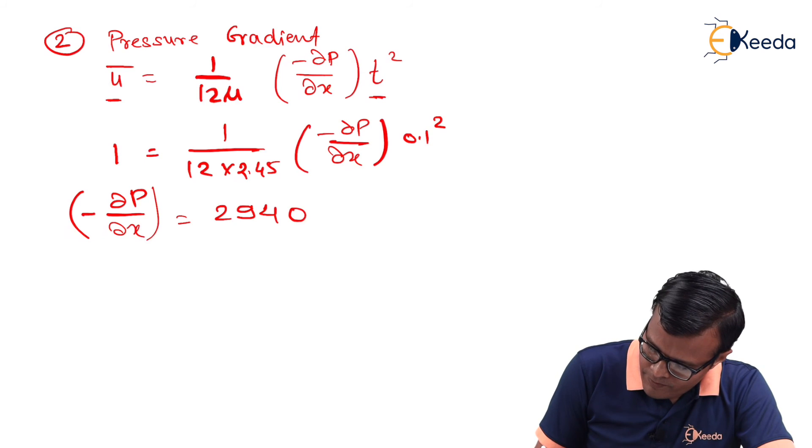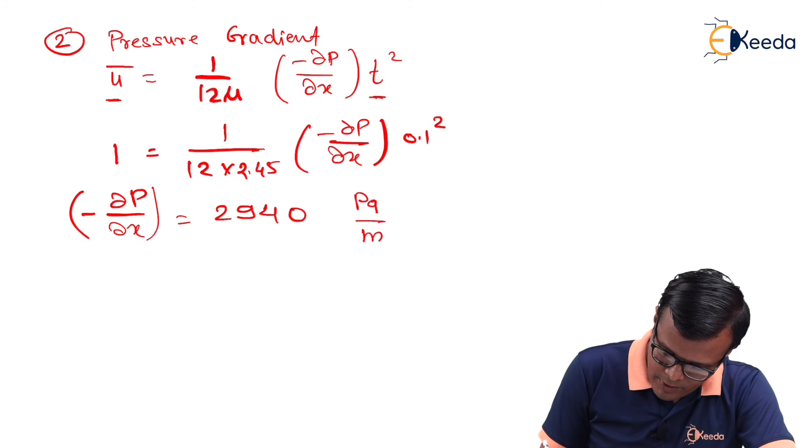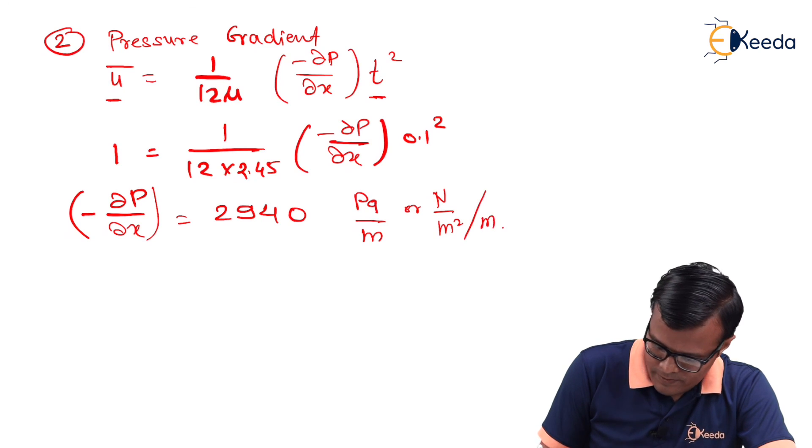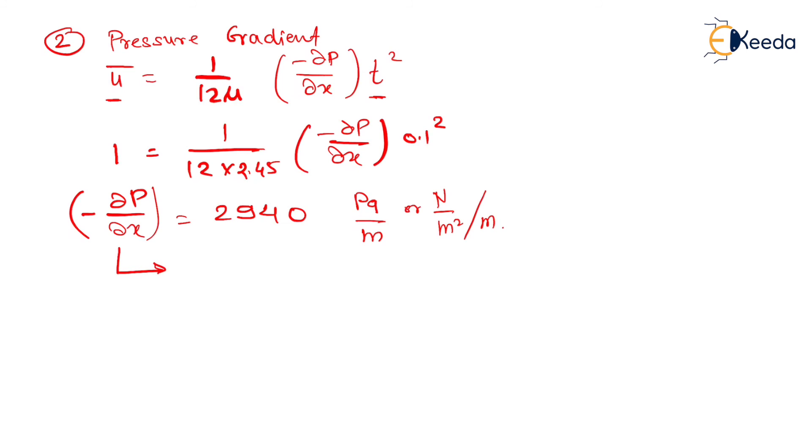This dp is measured in Newton per meter square that is Pascal. And dx is measured in meter. So, this will be the unit Pascal per meter or Newton per meter square per meter. So, this is nothing but the pressure gradient. We can define it as change in pressure with change in distance along x direction.